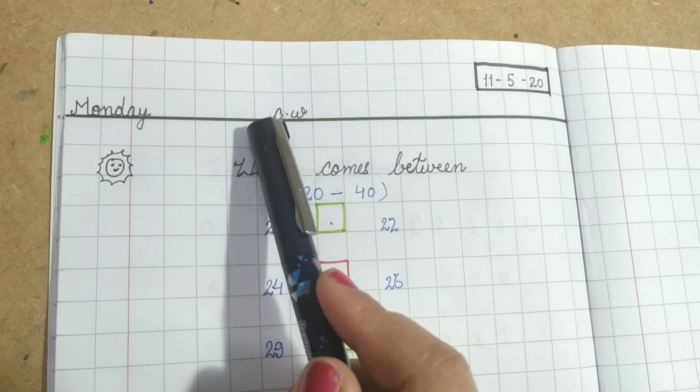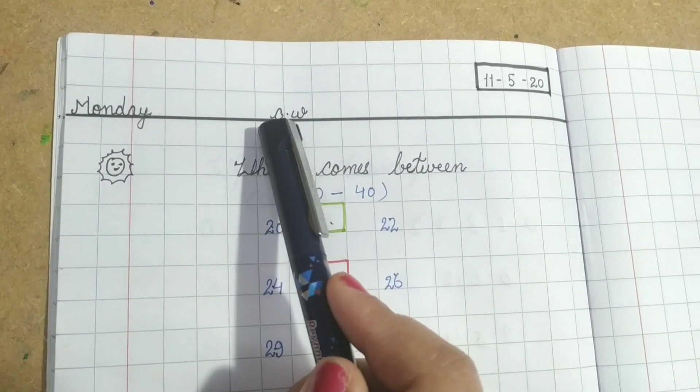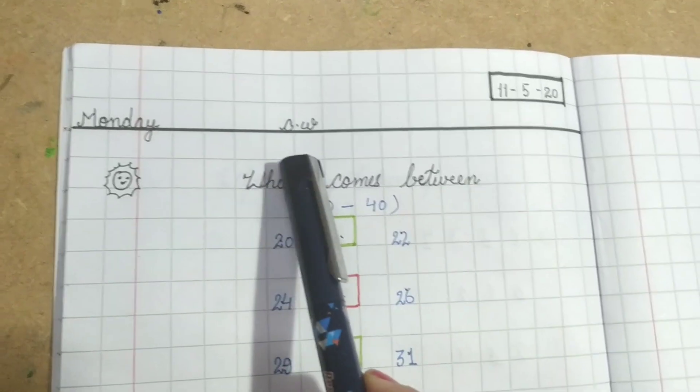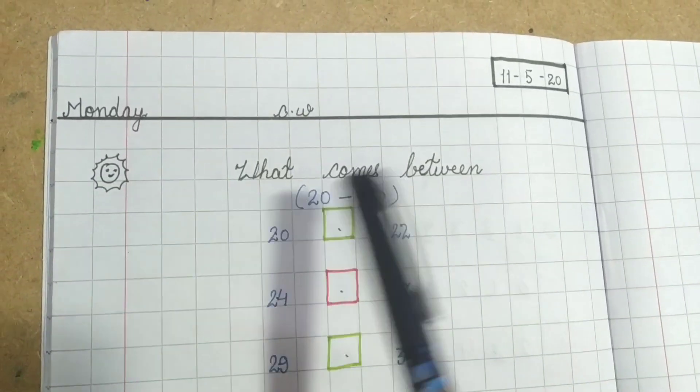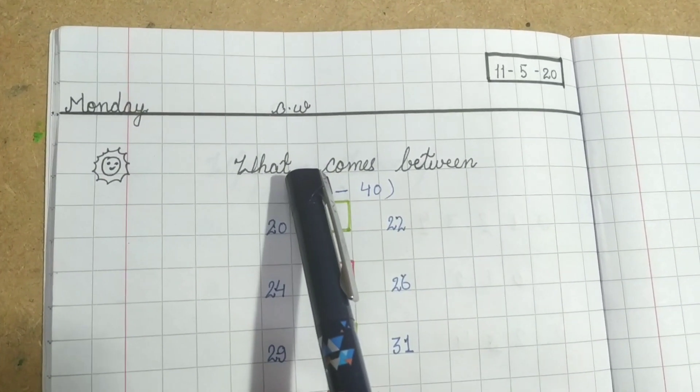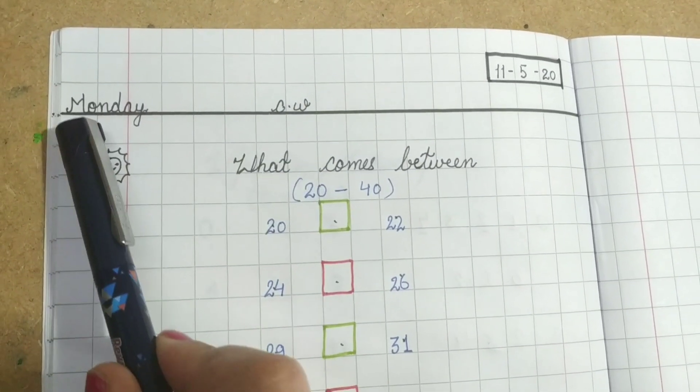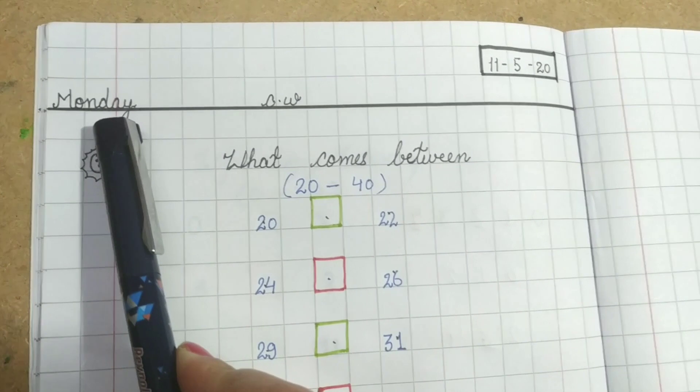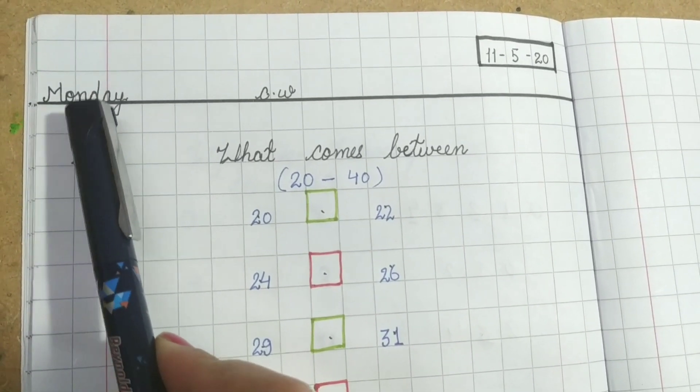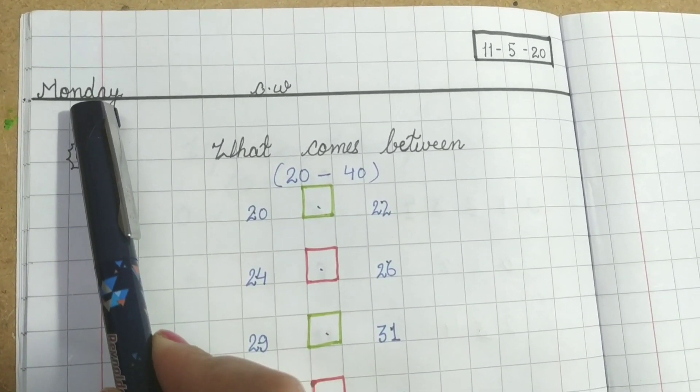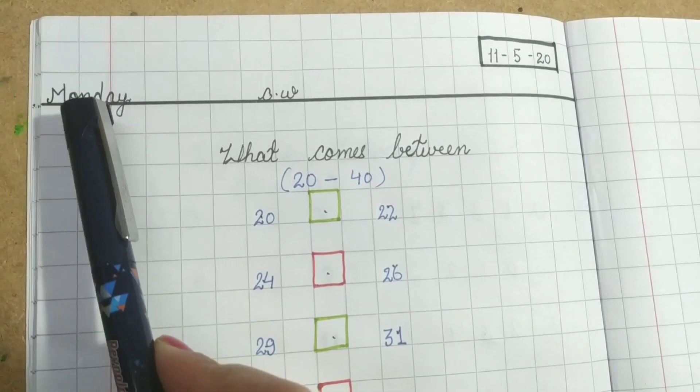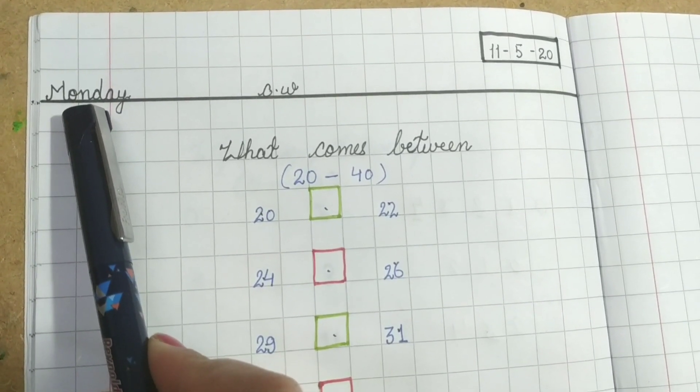After that, you have to write CW – C for class and W for work. Today we have done a new thing in this notebook. We have written the day. What's the day today? Today is Monday.